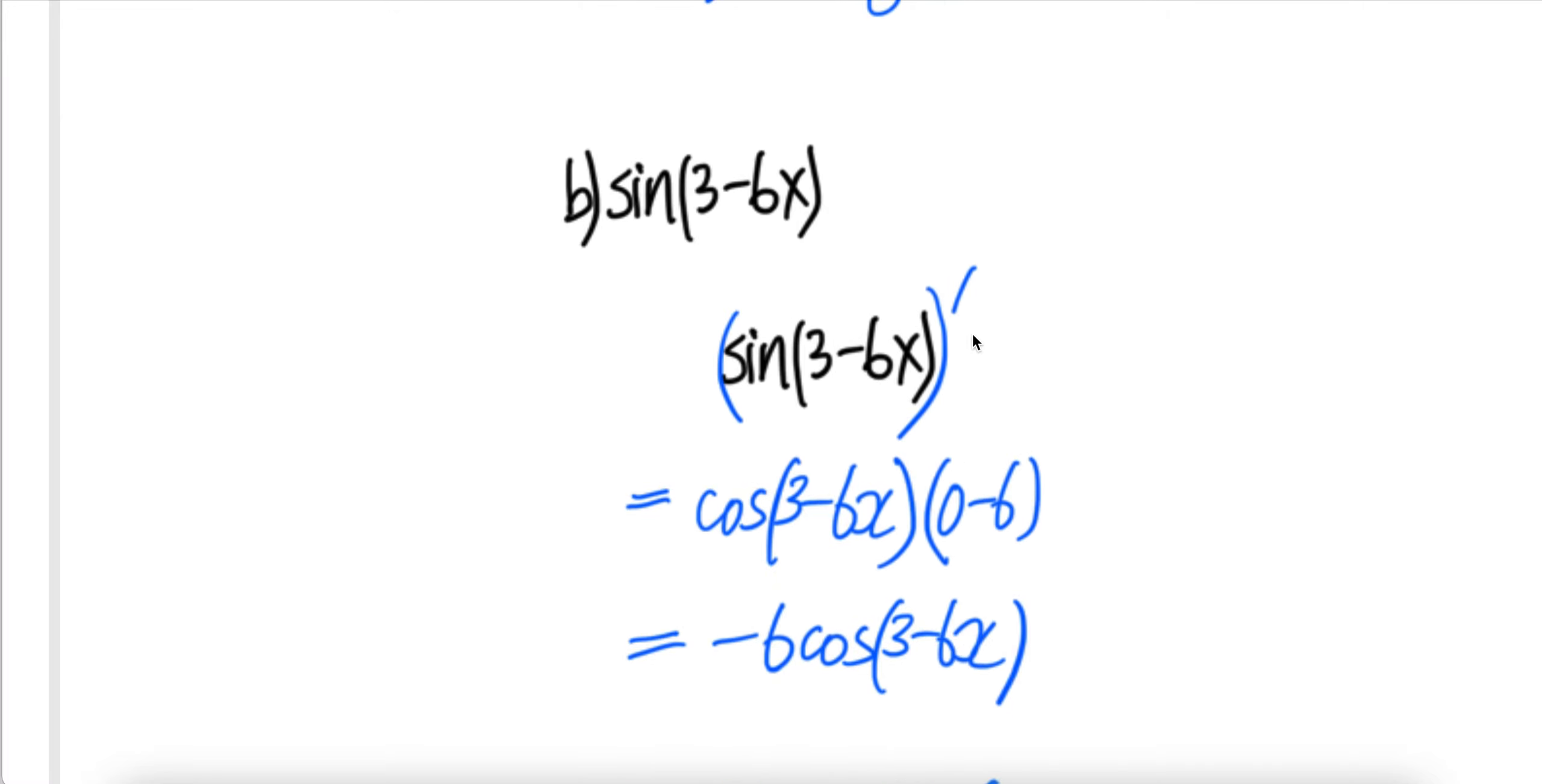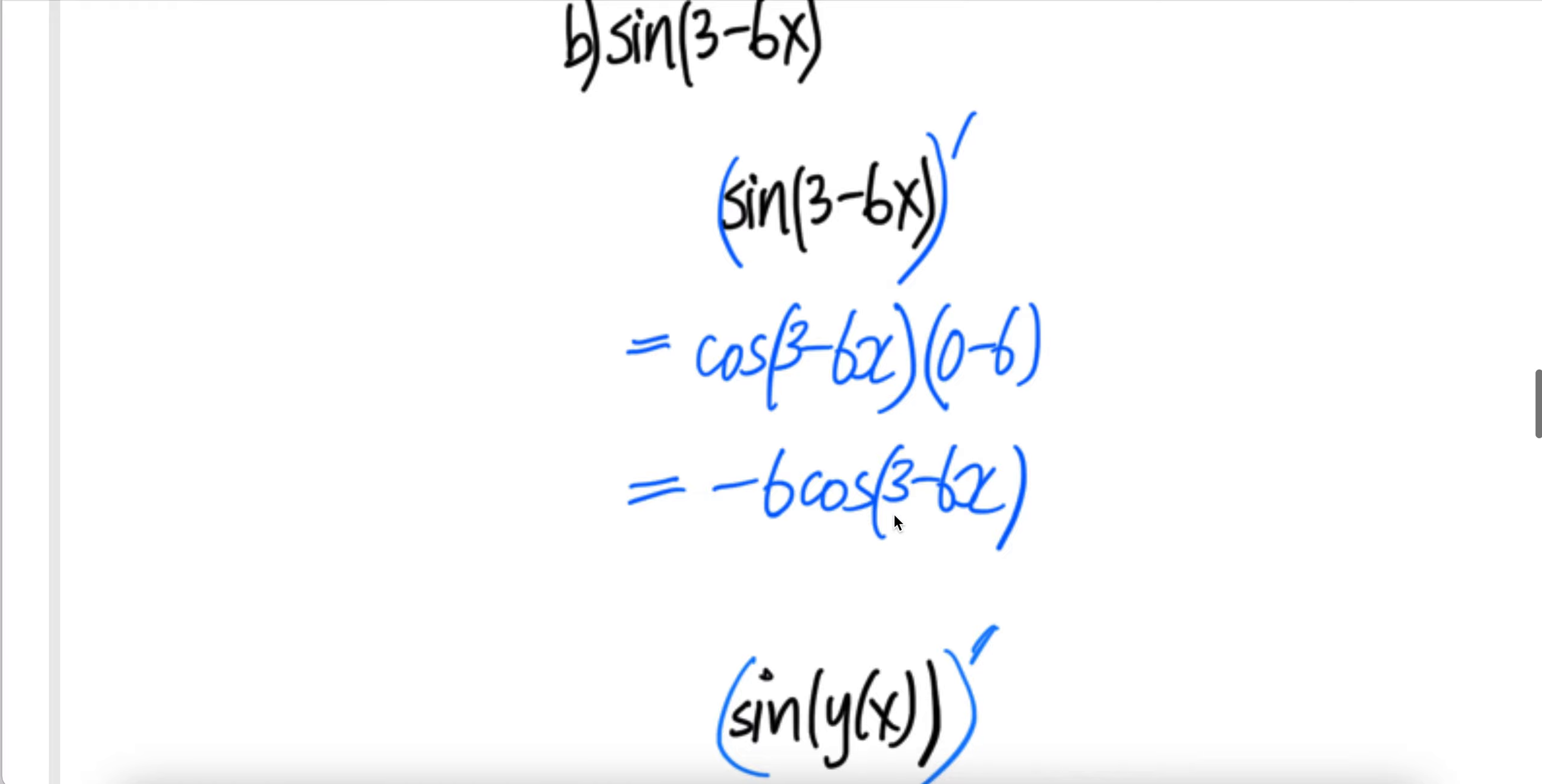Part B. Derivative of that is, derivative of sine is cos of the same thing here, times the derivative is 0 minus 6. We get minus 6 cos of 3 minus 6x.